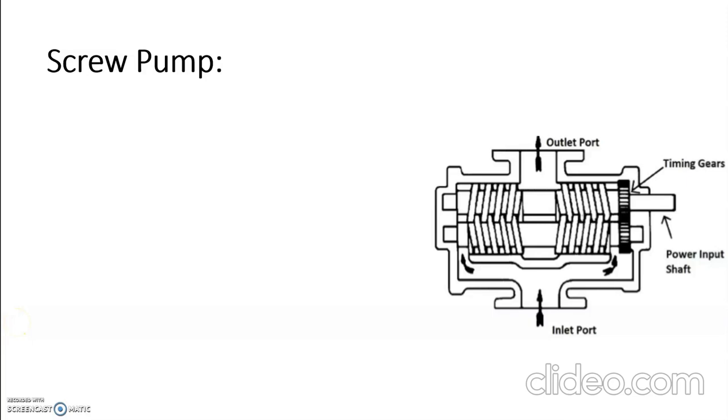Screw pump is the fourth rotary pump. It consists of inlet and outlet port, a housing, and two spindle screws. One is driven and the other is the driving spindle. This is the driving spindle here.